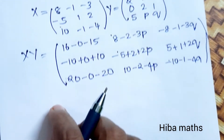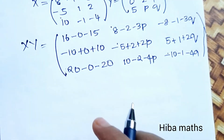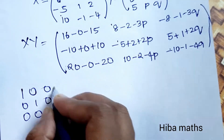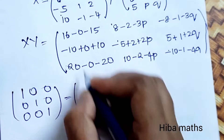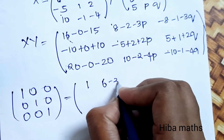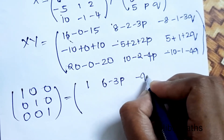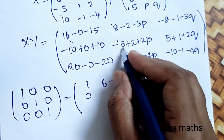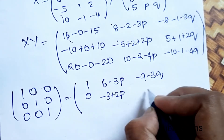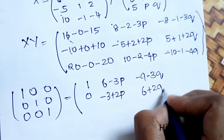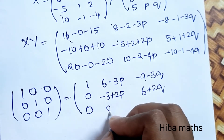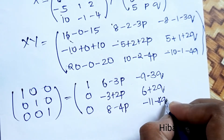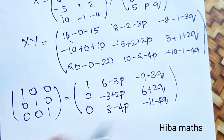By multiplying X and Y and equating to the identity matrix, we get: 1, 6 minus 3P, minus 9 minus 3Q; 10 minus 10, 0; minus 3 plus 2P, 6 plus 2Q, 0; 8 minus 4P, minus 11 minus 4Q.